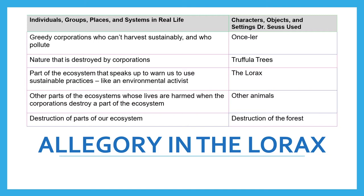In the case of the Lorax, we have greedy corporations who can't harvest sustainably and who pollute — that is something that happens in real life. In real life, nature is destroyed by corporations. There are environmental activists, or even parts of an ecosystem, that speak up to warn us to use sustainable practices. There are other parts of the ecosystem whose lives are harmed when corporations destroy part of it.